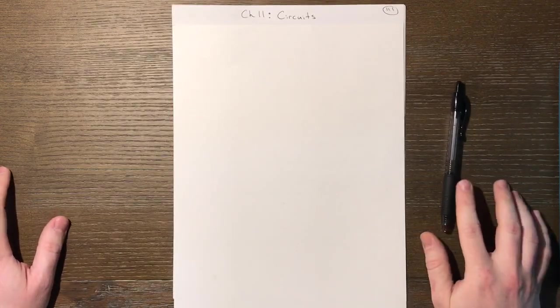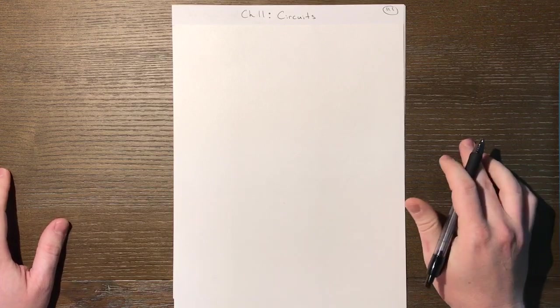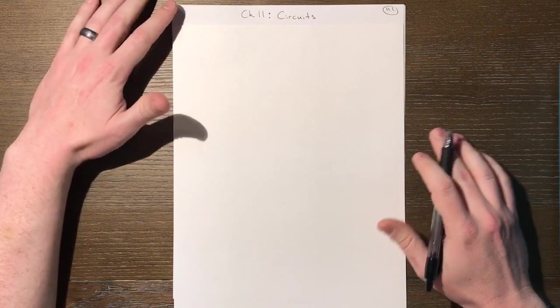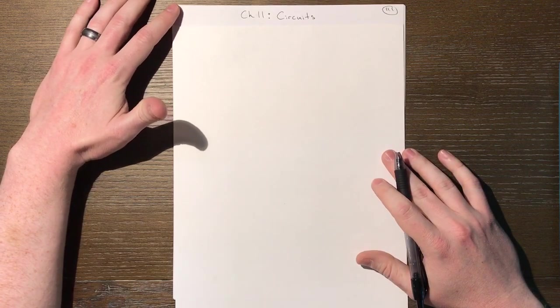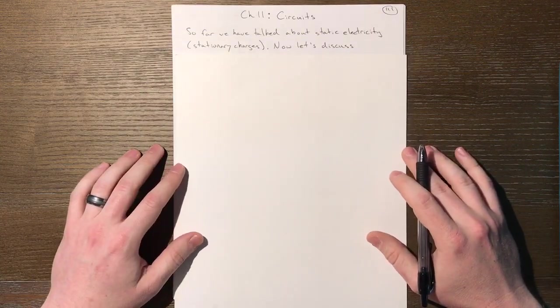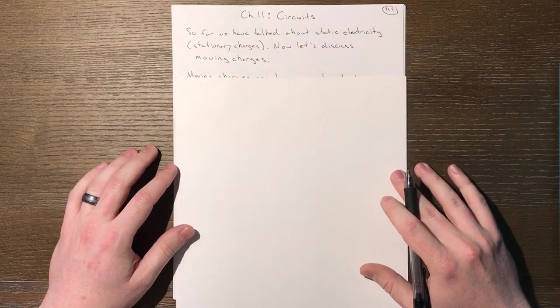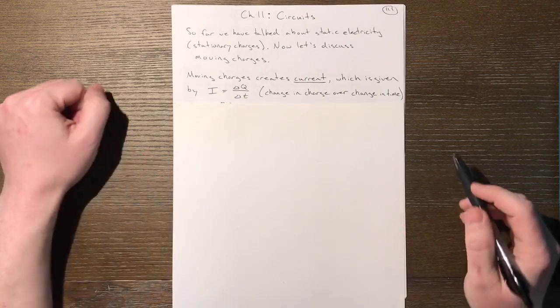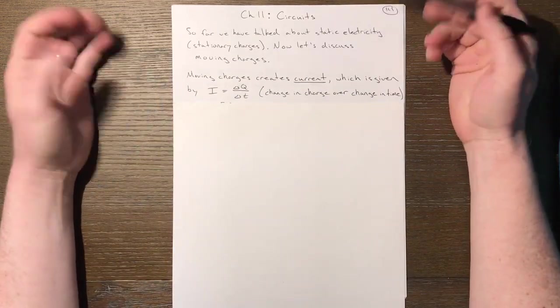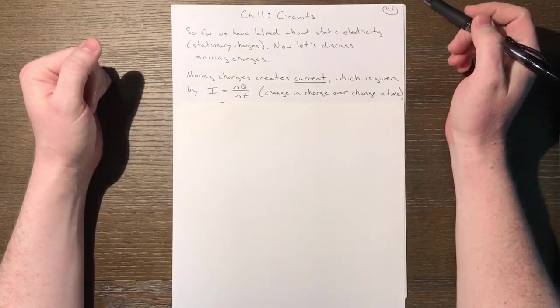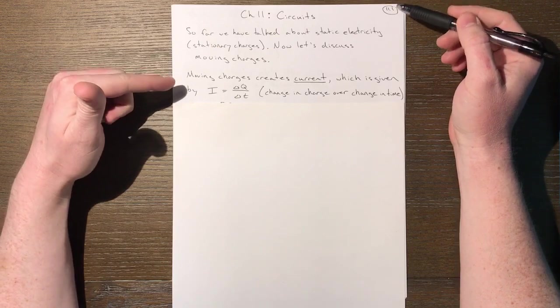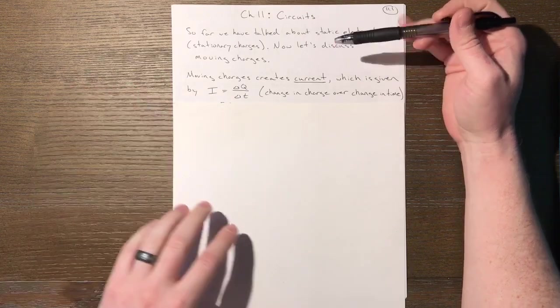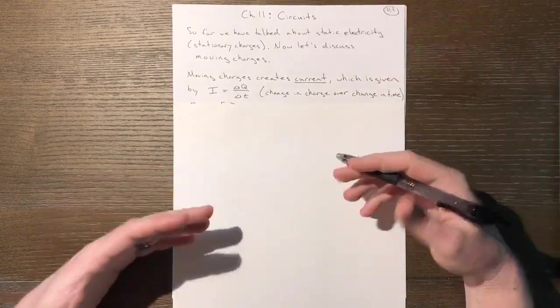Alright, gather around folks as we begin our penultimate chapter. This is Chapter 11: Circuits. We learned about static electricity, now we're talking about moving electricity. Moving charges create current, which is given by the letter I. Current is defined as delta Q over delta T, change in charge over change in time, or how much charge you're moving.